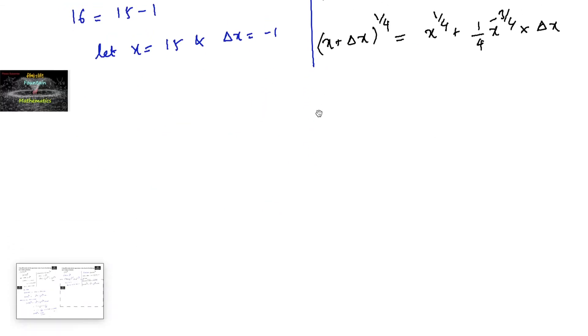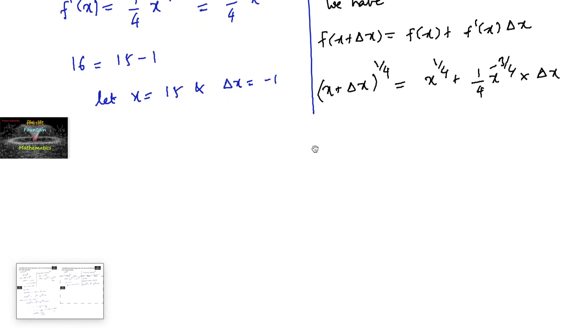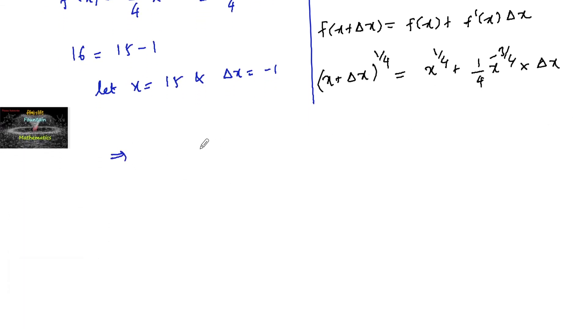Substituting the values, 16 to the power of 1 by 4 equals 2 plus 1 by 4 into 16 power minus 3 by 4. This is 2 plus 1 by 4 into 2 to the power of minus 3, that is 1 upon 8 into minus 1. So this is 2 minus 1 upon 32.